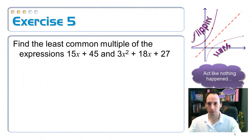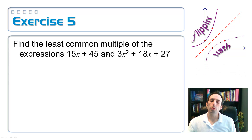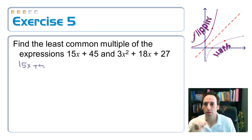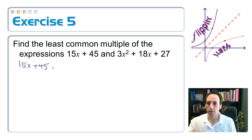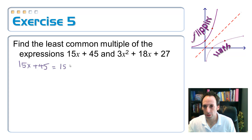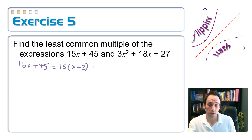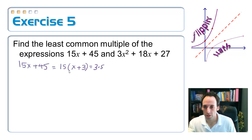I want to find the least common multiple of these two algebraic expressions. The first one is 15x plus 45 — they have a common factor of 15, so pull it out: 15 times (x plus 3). And I want to factor the 15 further — that's 3 times 5, times (x plus 3).